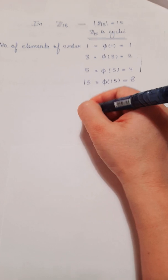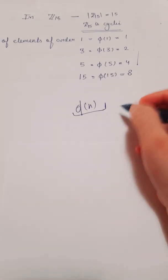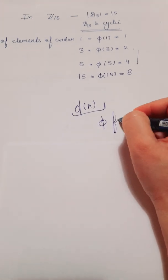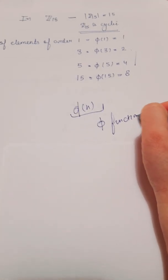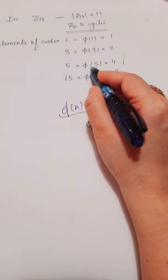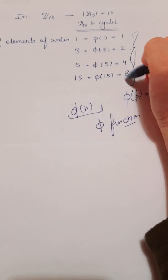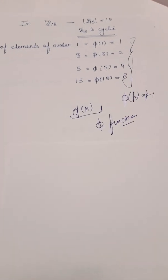So phi of n, we know how can we calculate phi of n. This is the phi function we have already studied in many videos. Like phi of p is p minus 1, like phi of 5 will be 4. So we need to find only phi m for finding number of elements.